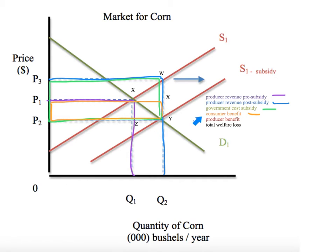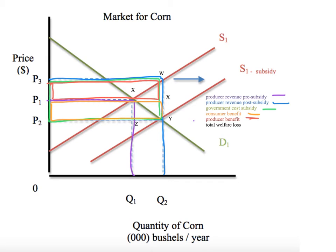What about the producer benefit? Producers started at P1, and now they're getting P3. P3 all the way out to Q2 — that's producer benefit. This can get tricky, because if you look at the tax graph, which most people learn first, the consumer side and producer side get flipped around. But if you think about where the producer started — P1 — and what they now get — P3 — it's this box. And where did the consumer start? P1. What do they pay when they buy a bushel of corn now? P2. That's sweet. Don't overthink it.